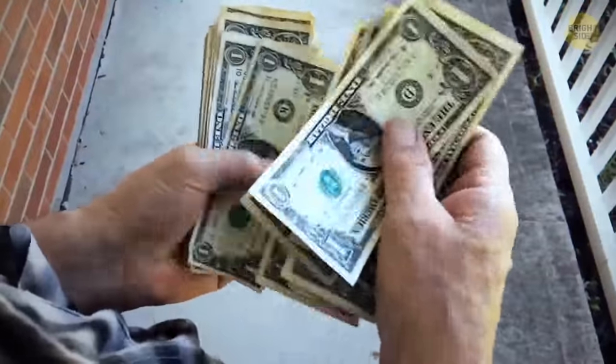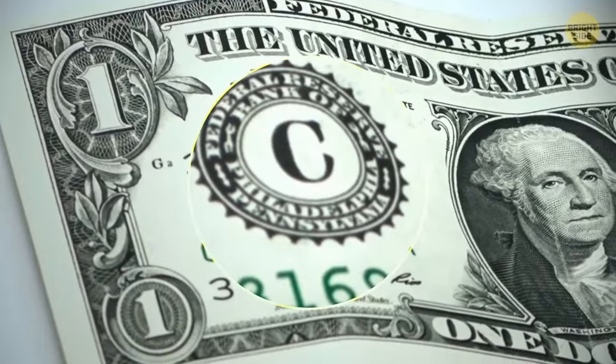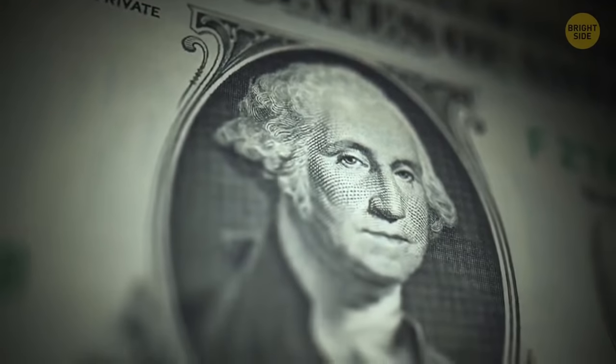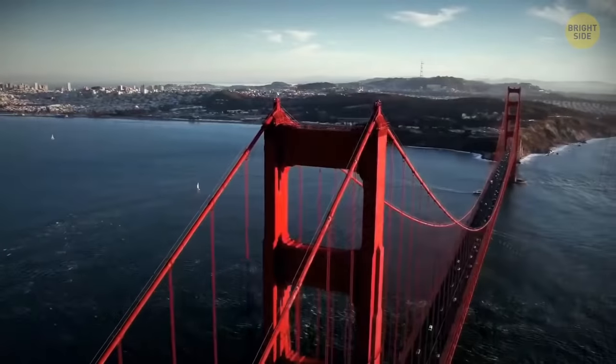A dollar has its secrets, too. A large letter with a rim shows which bank is responsible for issuing this bill. There are 12 banks distributing currency. For example, the L says it was printed in San Francisco.